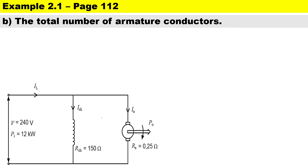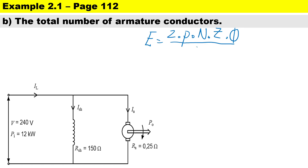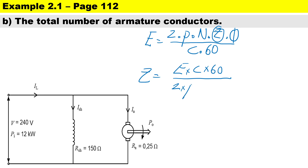The next question requires calculating the total number of armature conductors. We use the EMF equation: E = (2 × number of pole pairs × speed × Z × flux) / (number of parallel paths × 60). Rearranging to isolate Z gives: Z = (E × C × 60) / (2 × pole pairs × speed in RPM × flux per pole in weber), where we substitute the EMF from the previous question.